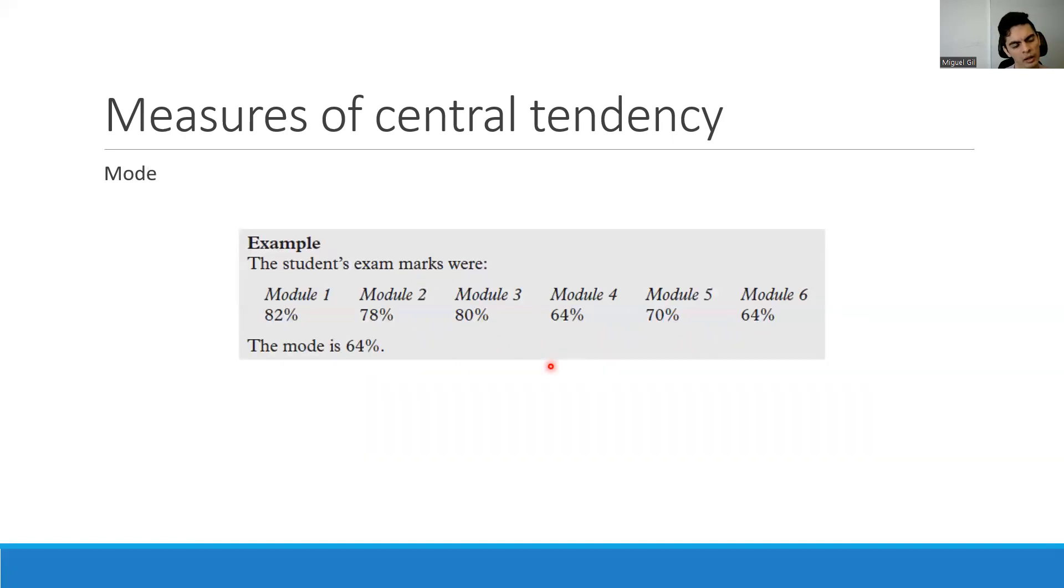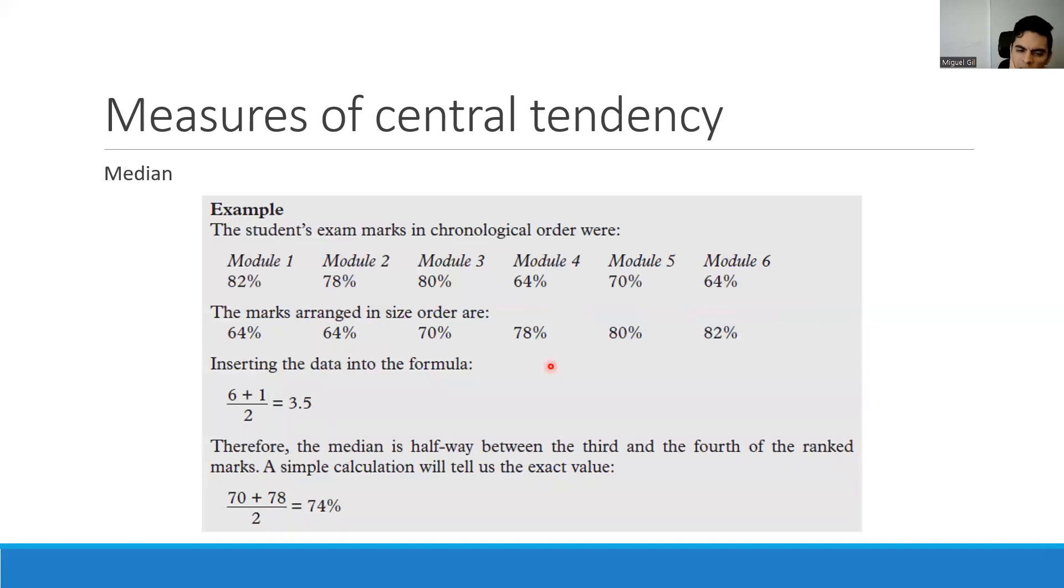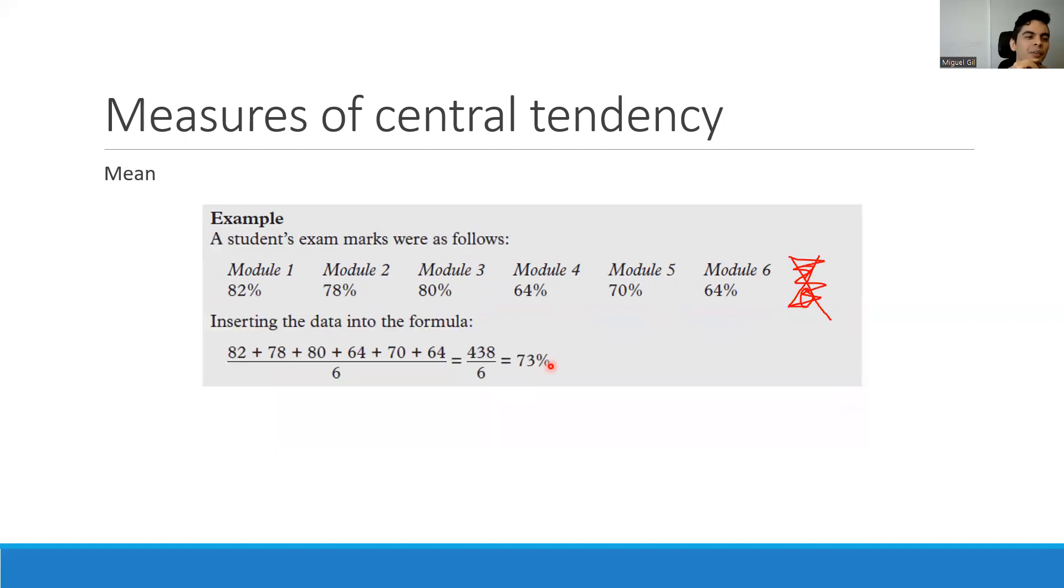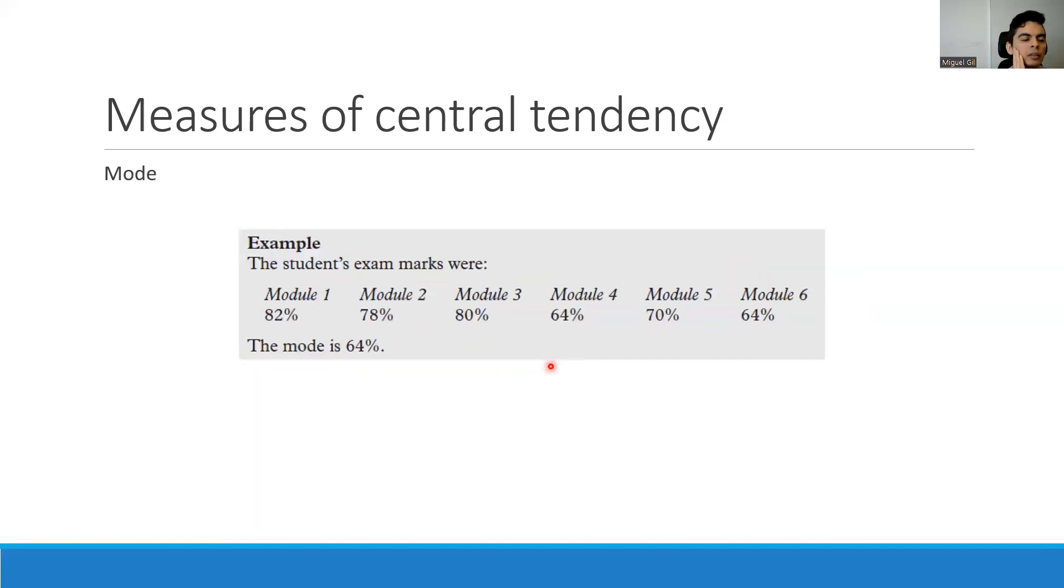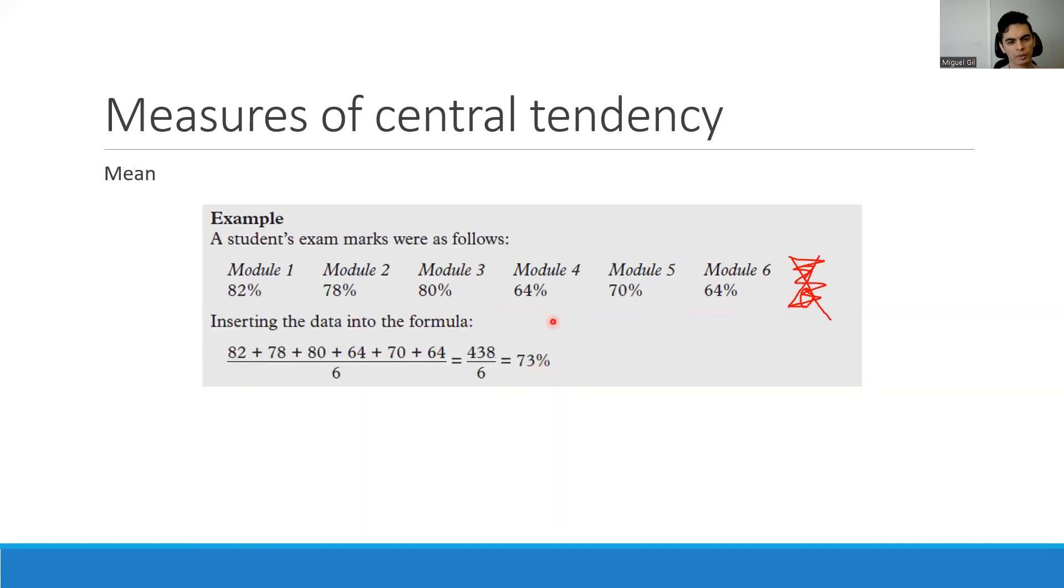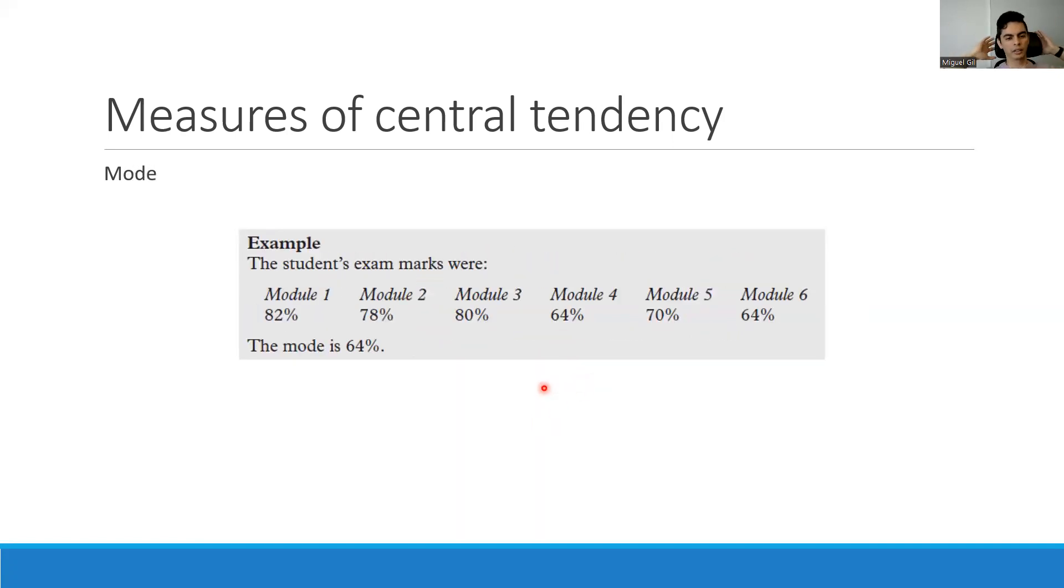So median and mode are relevant. These are something that can be useful, but not all the time. From one to 10, I will say they are like five level of relevance. But the mean is definitely 10. Mean is extremely relevant. The average is maybe one of the most important descriptive statistics. Median and mode, it depends on the context. Maybe they are really relevant. So that's why I would say five out of 10 in relevance, but super important. And they are so easy. In Excel, you have the formulas already. So you can just use the formula and Excel will calculate it for you. You don't have to do it manually. The same with SPSS.